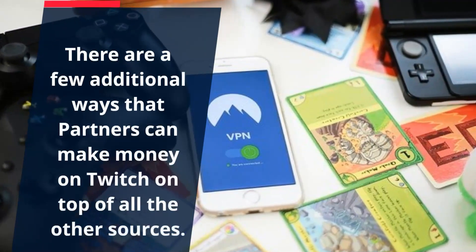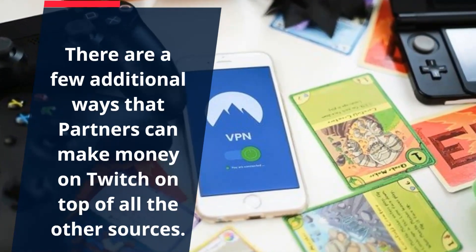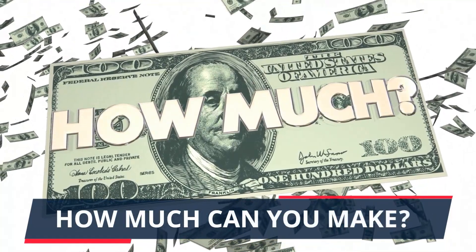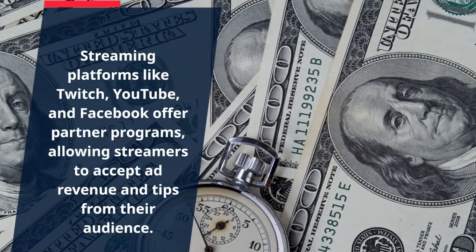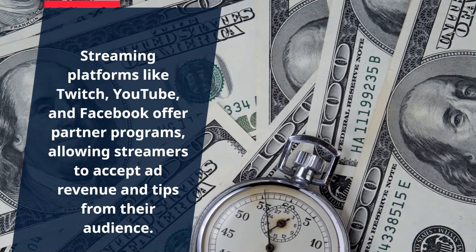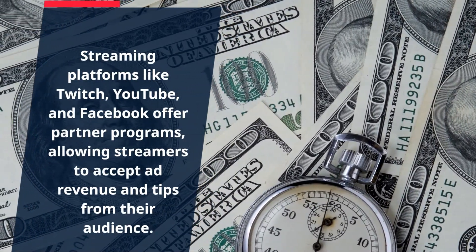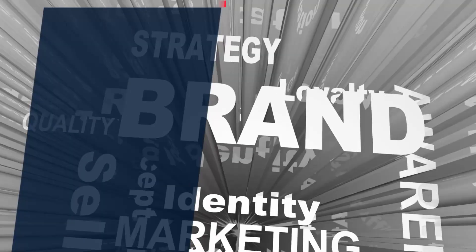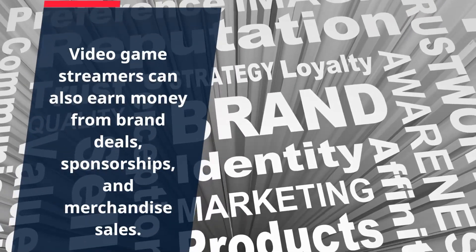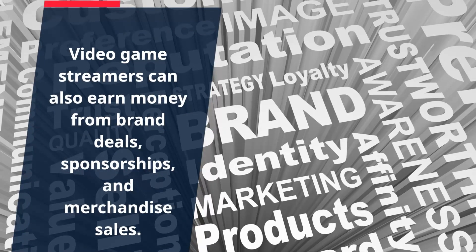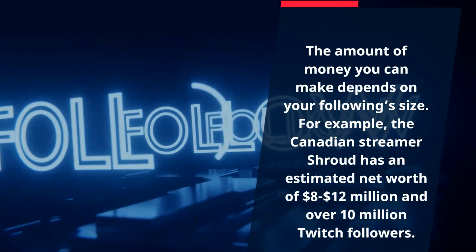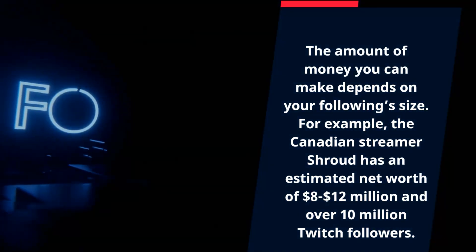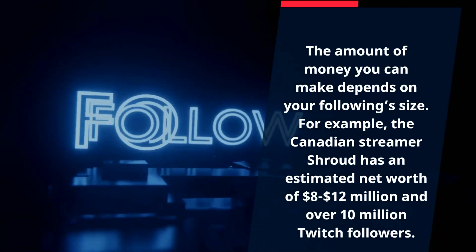There are a few additional ways that partners can make money on Twitch on top of all other sources. Streaming platforms like Twitch, YouTube, and Facebook offer partner programs allowing streamers to accept ad revenue and tips from their audience. Video game streamers can also earn money from brand deals, sponsorships, and merchandise sales. The amount of money you can make depends on your following size — for example, the Canadian streamer Shroud has an estimated net worth of $8–$12 million and over 10 million Twitch followers.